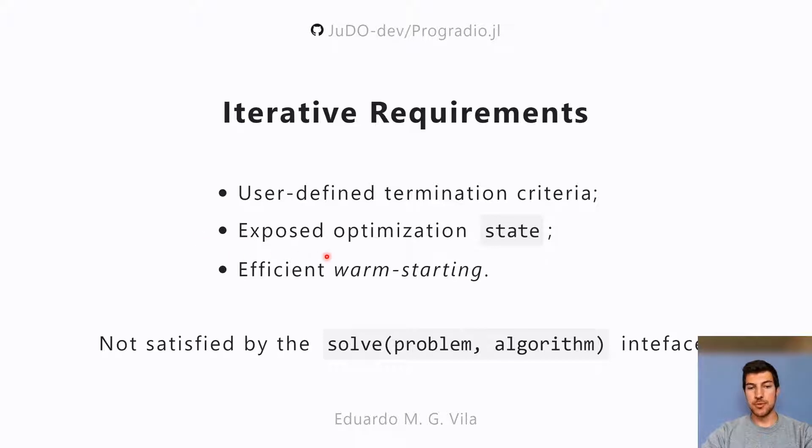We should be able to expose the optimization state, such as the current information about the problem, also the previous iterations if necessary, the gradient and so on, such that the user doesn't have to recompute each iteration to judge, and we should also facilitate warm starting.